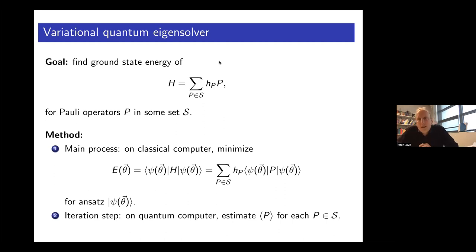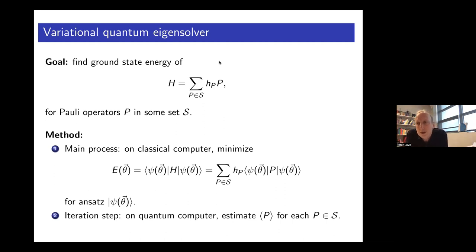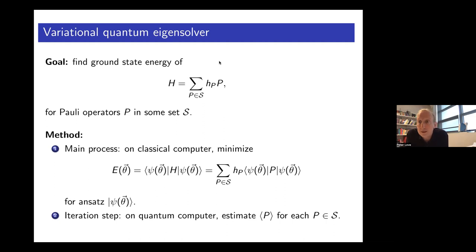How do we estimate this objective function? We do that on the quantum computer by separately estimating each term P in the given ansatz state. We repeatedly prepare the ansatz state many, many times — and the number of different preparations is a significant obstacle to doing this algorithm at large scale at the moment. Then we do the optimization step on the classical computer. The advantage is that it reduces the problem of estimating the energy to a large number of small, short quantum calculations, so you can make use of whatever quantum computer you have.